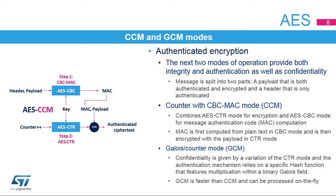The MAC is then encrypted with the payload in a second AES CTR pass. The same key is used for both the CTR and CBC passes. The second authenticated encryption mode is the Galois counter mode, or GCM. Confidentiality of data is provided using a CTR mode, and authenticity of the confidential data is provided using a universal hash function defined over a binary Galois field. GCM is faster than CCM, as it requires only one pass of the AES engine for each payload block. Furthermore, the payload message can be processed on the fly without storing it for multi-pass processing.